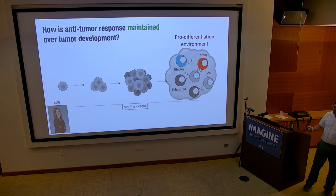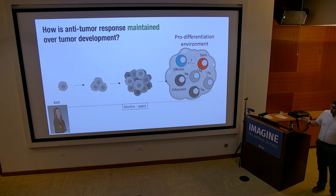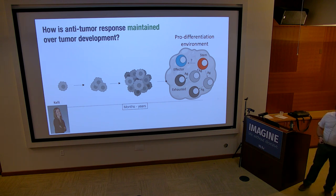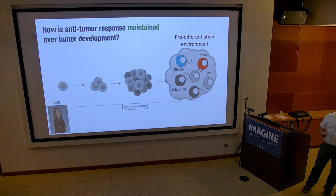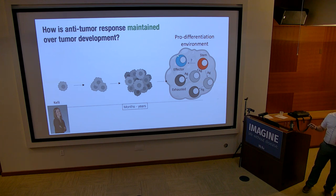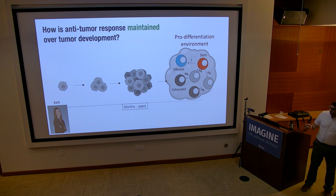We know these precursor exhausted cells should be present in a patient when they walk into the clinic for therapy — otherwise therapy wouldn't work. But tumors take months or years to develop, and all that time there's antigen these T cells should be seeing. How is it possible to maintain a stem-like population in an antigen-rich environment and still have those cells at time of treatment? We actually thought these cells would be gone, but it turned out that after months of tumor development we could still find stem-like cells within the tumor. So we asked where they were coming from.